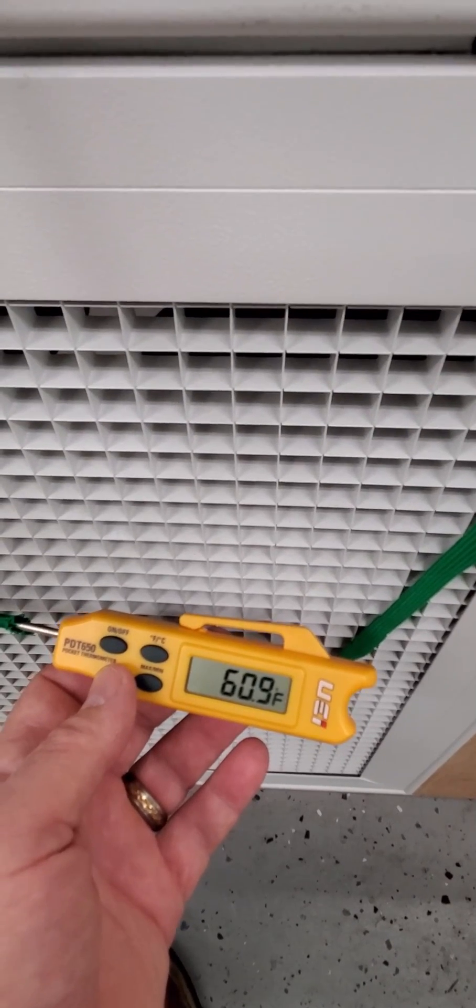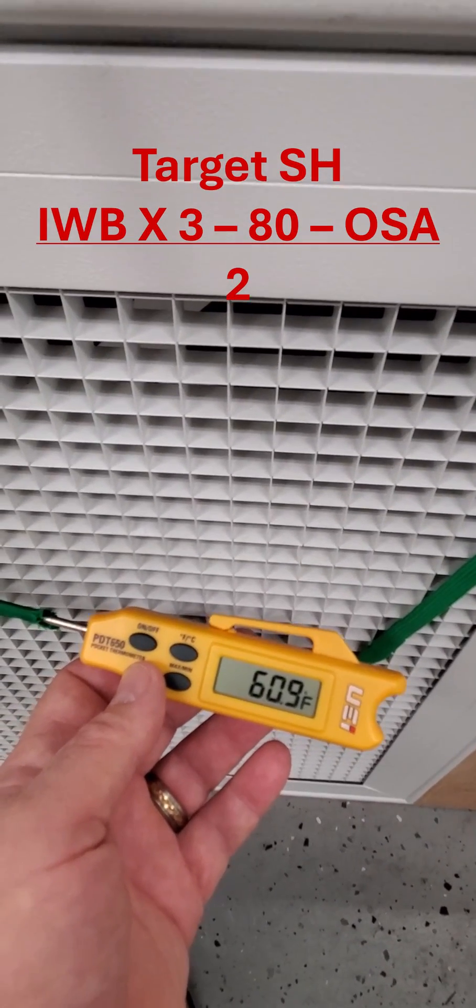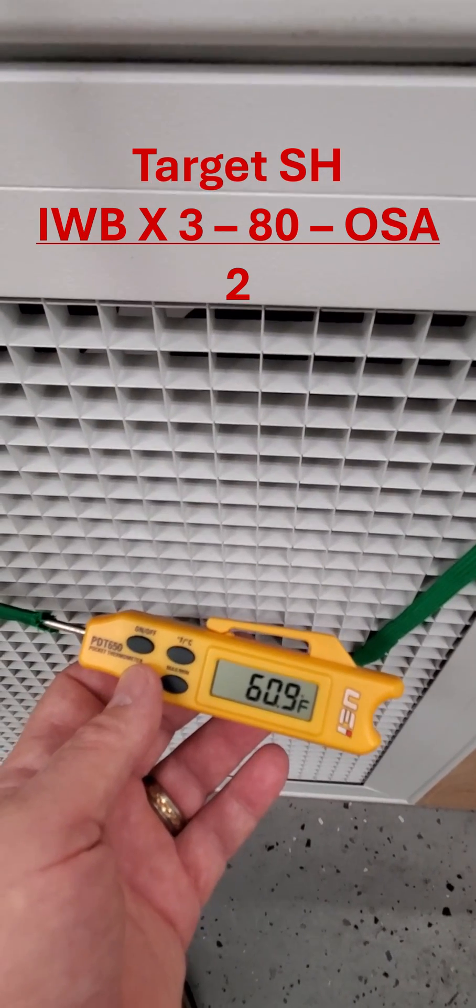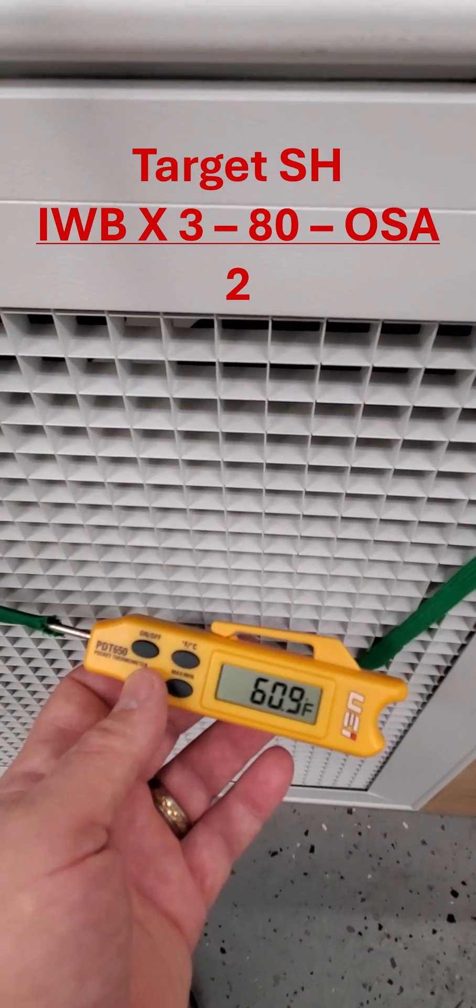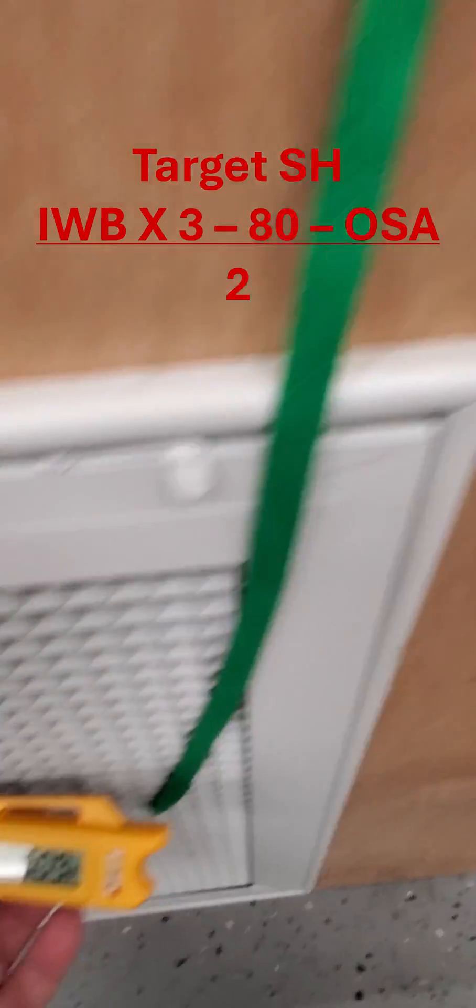What's the calculation for target superheat? Remember, it's the indoor wet bulb times three, minus 80, minus the outside air temperature. Divide all that by two, and you'll get your target superheat.